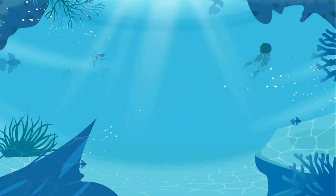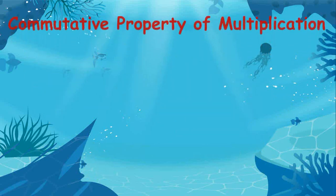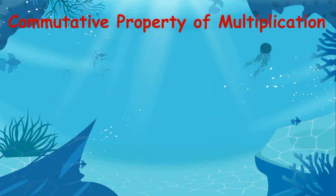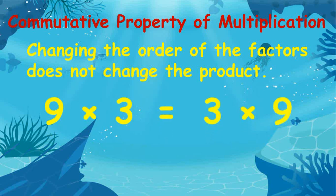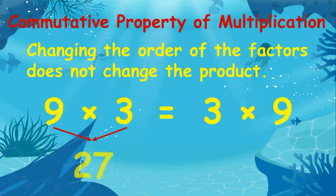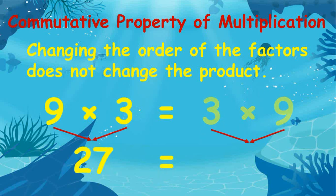The commutative property of multiplication states that changing the order of the factors does not change the product. An example is 9 times 3 is the same as 3 times 9 — 9 times 3 is equal to 27, and so is 3 times 9.